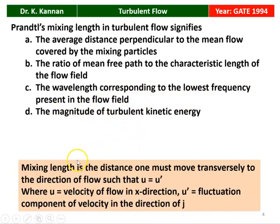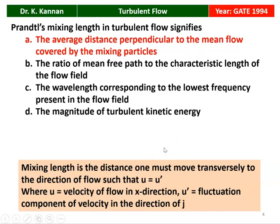The definition of mixing length in turbulent flow: it is the distance one must move transversely along the direction of flow such that u equals u-dash, where u is the velocity in the x-direction and u-dash is the fluctuation component of velocity. So the answer is the average distance perpendicular to the mean flow covered by the mixing particle — that is the significance of the Prandtl mixing length.